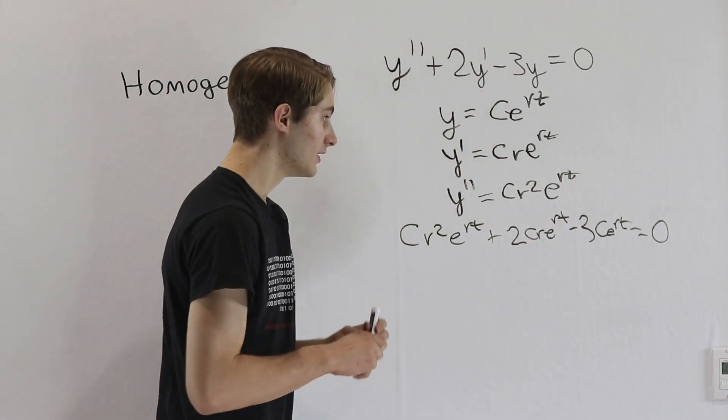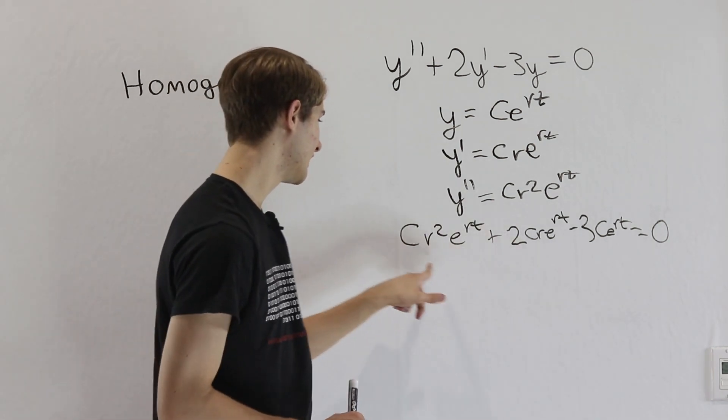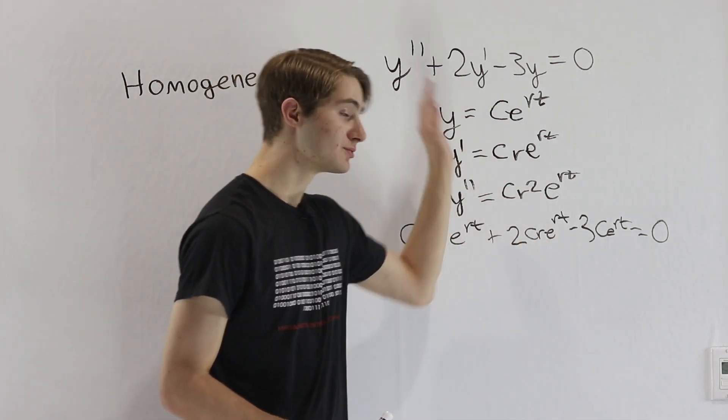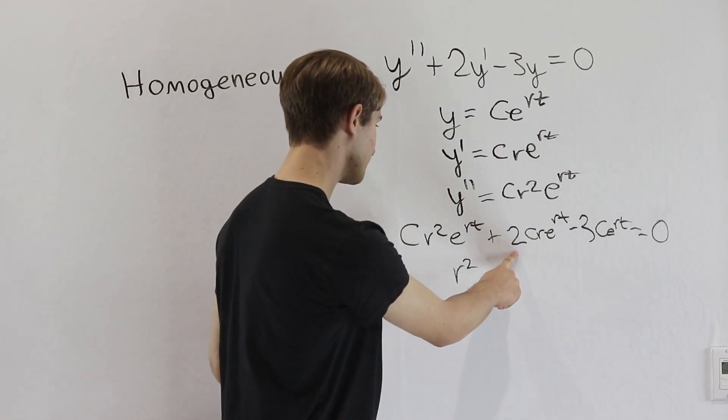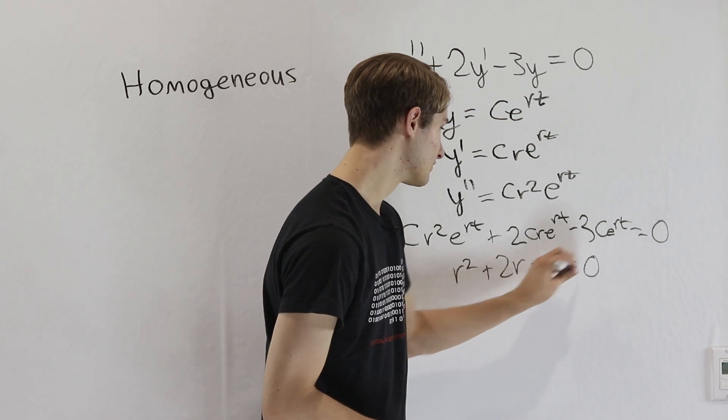This equals 0. And we see there's a lot of stuff that we can cancel out because every single term here has a c e to the rt. So we can divide that out of all of the terms, which leaves us with an r squared plus 2r minus 3 equals 0.